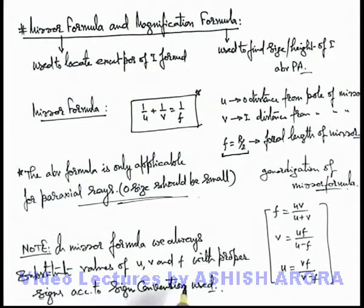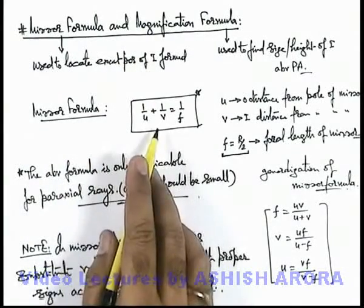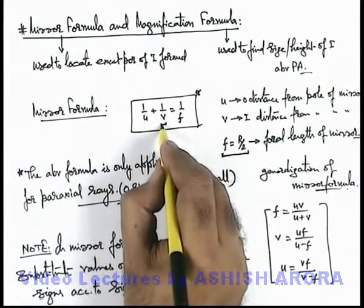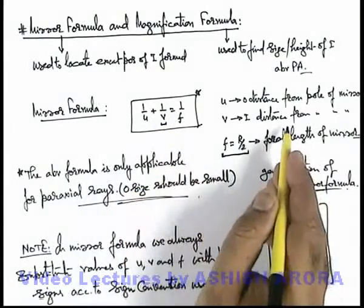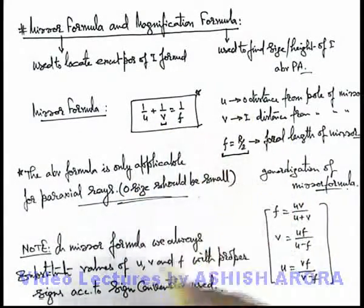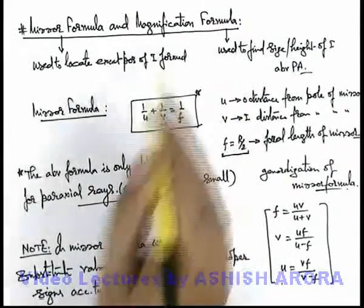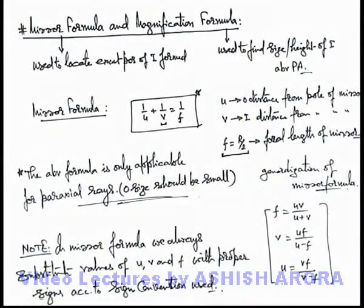Let us first continue on the next sheet about magnification formula. This mirror formula is used to find out mainly the value of v which is the image distance from pole, if object distance and focal length are known. We'll apply it, we'll see later. First let's study about magnification formula.